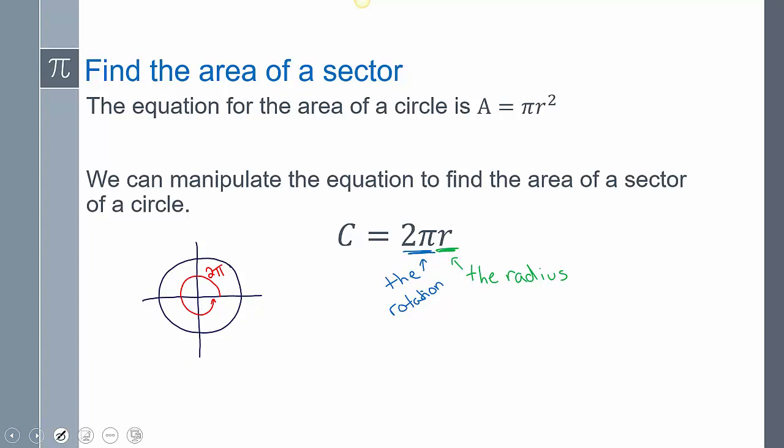Now the area of a sector. So the equation for the area of a circle is pi r squared. And that's something that we should have memorized. So we can actually manipulate this equation to find the area of a circle. We're going to use this idea of circumference to kind of help us just a little bit. So we know that with the circumference, that's normally 2 pi r. Now r is the radius, but 2 pi, that's the rotation.